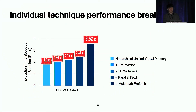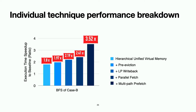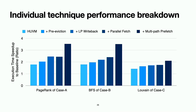We break down the individual techniques in MemHarvester and show how each contributed to overall performance improvement, using BFS in case B. Adding techniques one by one from left to right: the naive HUVM data path alone gives 1.8x improvement; adding pre-eviction reduces on-demand evictions; large-page writeback makes pages removable faster; parallel fetch reduces fetch latency; and finally multi-path prefetching yields an overall 3.5x performance improvement. This pattern holds across all cases.